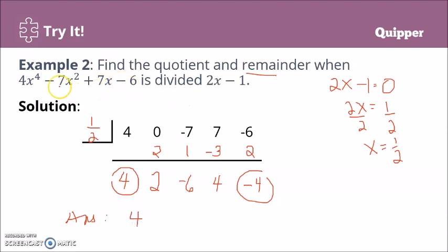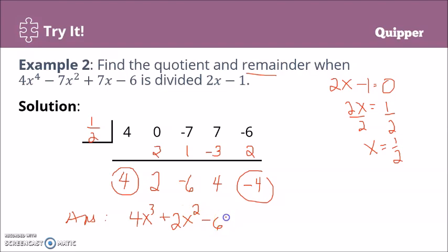The degree of the quotient is one less than the degree of the dividend, so the quotient starts at x³. The quotient is 4x³ plus 2x² minus 6x plus 4, with remainder negative 4 over the divisor (2x minus 1). So the full answer is 4x³ plus 2x² minus 6x plus 4 minus 4 over (2x minus 1).